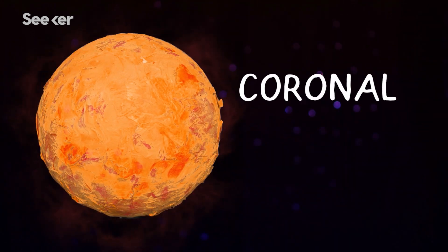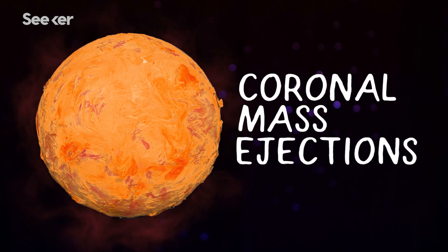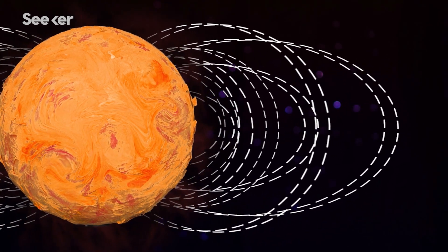These eruptions are called coronal mass ejections, or CMEs, and they happen when the sun's surface gets a little twisted.